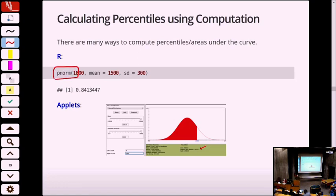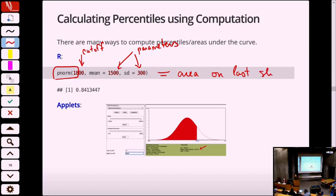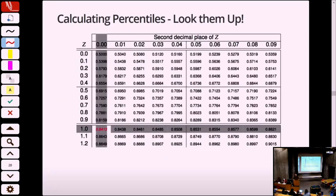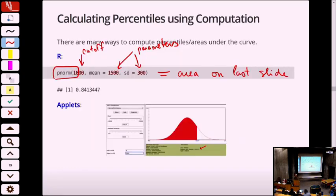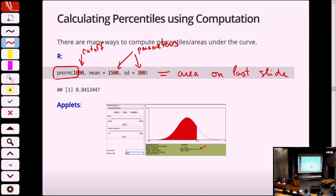The R function is PNORM. This computes the probability of a random variable that is normally distributed being less than the cutoff, with the distribution parameters specified. So for that last slide with the area shaded in and 1,800 as the cutoff — SAT scores centered at 1,500 with standard deviation 300 — if we tell R to do PNORM of those three numbers, it gives us the exact area under that curve, which is exactly the probability of an SAT score being smaller than 1,800.